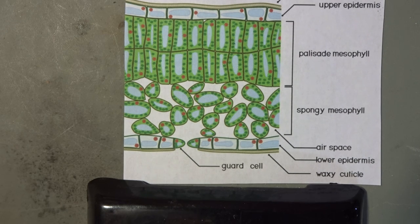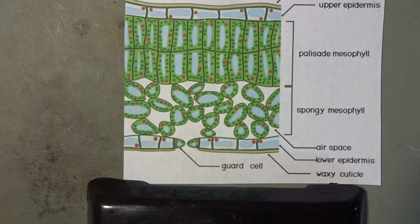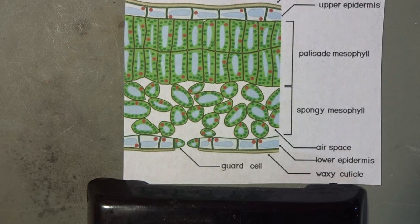Oxygen produced as a byproduct of photosynthesis exits the plants by means of stomata. When the stomata are open, water is lost by evaporation and must be replaced by means of the transpiration stream with water taken up by the roots. The transpiration stream is the flow of water through the plant from the roots to the leaves by means of the xylem vessels.